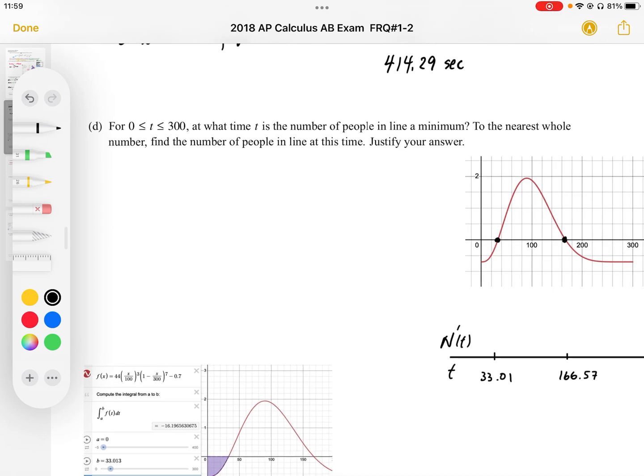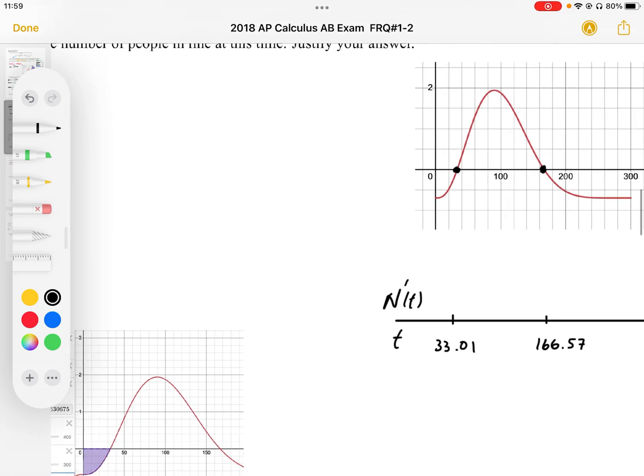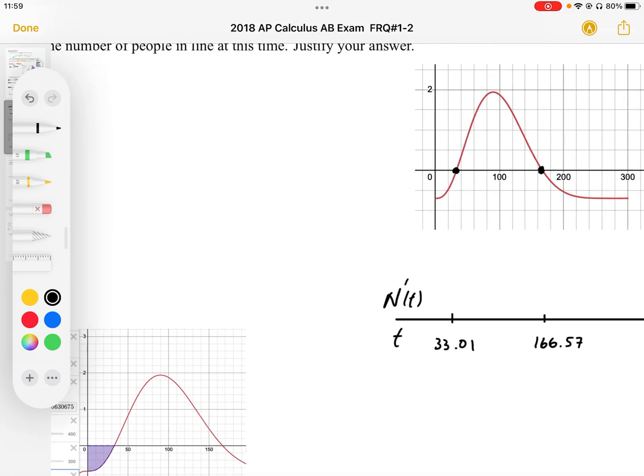If we want to find the minimum of n, we want to look at the slope chart of n prime. So if we take a look at the slope chart of n prime, we basically want to find our critical points where the derivative is equal to 0. So the derivative is equal to 0 at 33.01, and also at 166.57, there's a 0 slope here.